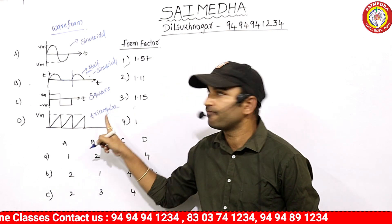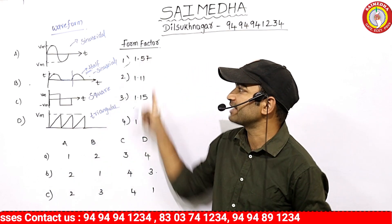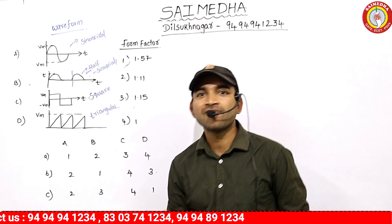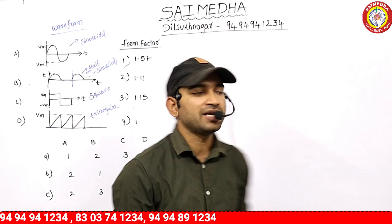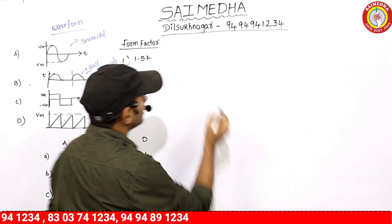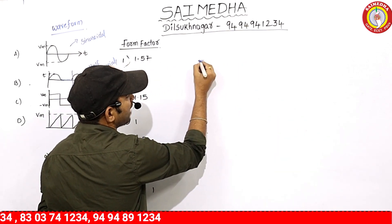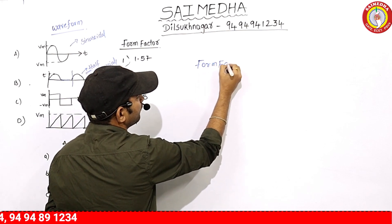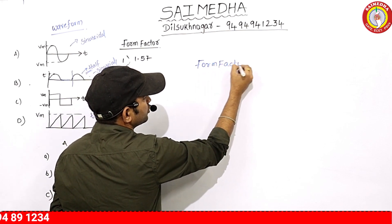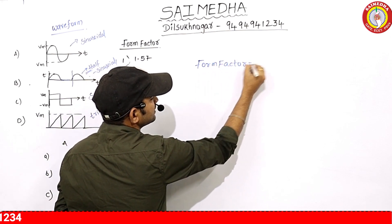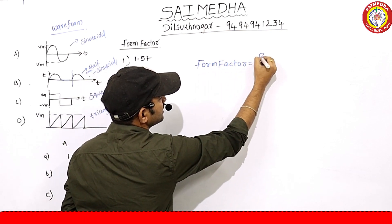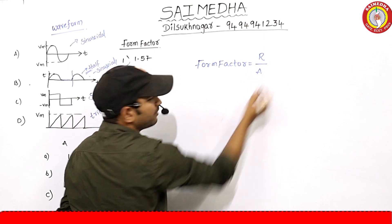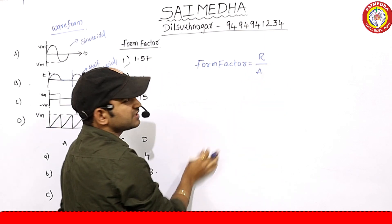If you want to match the waveform to its form factor, what values are involved? We need to find the form factor. Form factor is nothing but RMS value divided by average value.